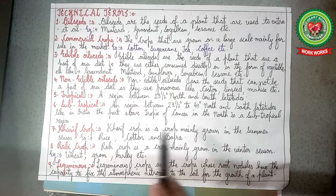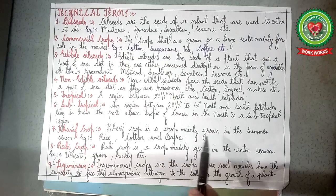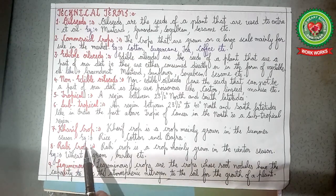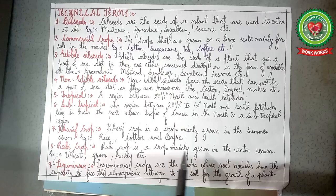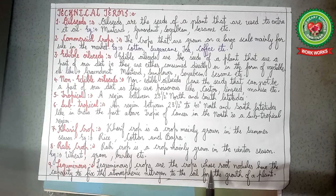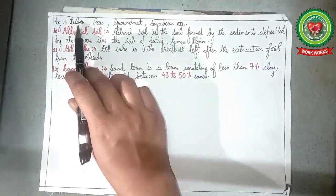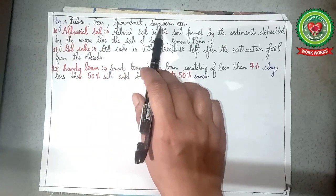Number 7, kharif crop: a crop mainly grown in the summer season — for example, rice, cotton, and bajra. Number 8, rabi crop: a crop mainly grown in the winter season — for example, wheat, gram, barley, etc. Number 9, leguminous: leguminous crops are crops whose root nodules have the capacity to fix atmospheric nitrogen to the soil for the growth of a plant — for example, pulses, peas, groundnut, soyabean, etc.